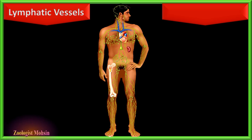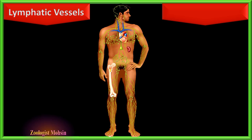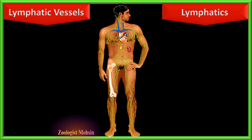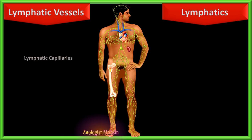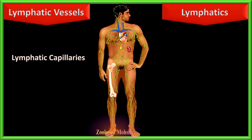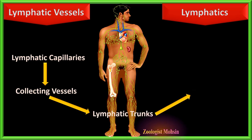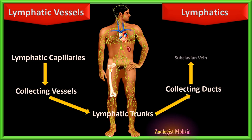Now let's talk about the second component of the lymphatic system: the vessels. Lymph vessels are like blood vessels and are also called lymphatics. The route of lymph is from lymphatic capillaries to collecting vessels, then to six lymphatic trunks, to two collecting ducts, and finally to the subclavian vein.